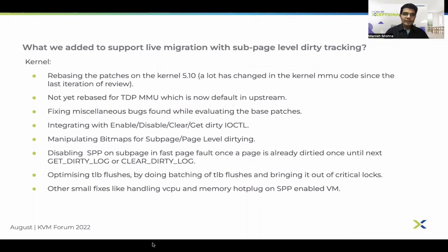On top of the base patches by Yang, we had to do a few additional things to use SPP with live migration. First, rebasing patches: those patches were meant for kernel 5.1, and we rebased them to kernel 5.10, with TDP MMU and upstream master rebasing coming soon. We also found a few bugs in the base patches while testing at QEMU scale, which were probably hidden with self-tests, and fixed those. We then integrated enabling and disabling SPP protection through set-memory-region when dirty logging is enabled.